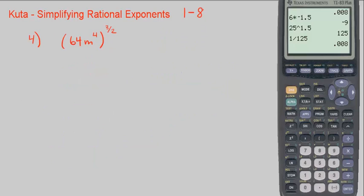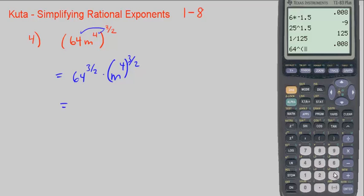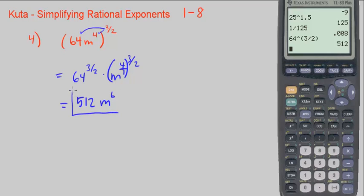Let's go on to number 4: 64m to the 4th, to the 3 halves power. Similarly, we distribute this power to every term inside, getting 64 to the 3 halves times m to the 4th to the 3 halves. For 64 to the 3 halves, we can take the square root of 64 and then cube it — the 2 makes it the square root and the 3 cubes it — or just use a calculator. We get 512. And m to the 4th to the 3 halves: 4 times 3 over 2 is 12 over 2, which is 6. So this is 512m to the 6th power.